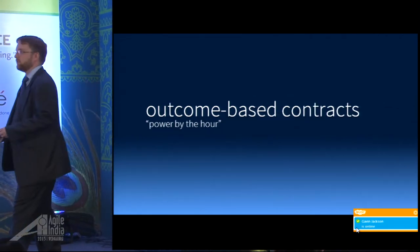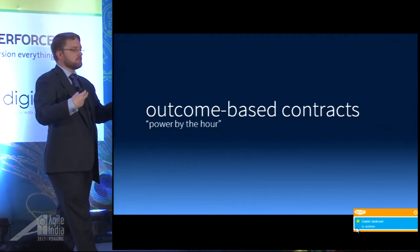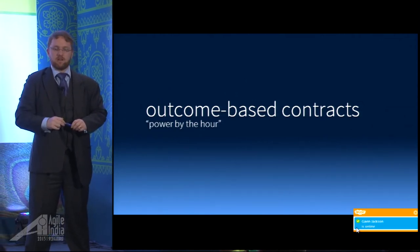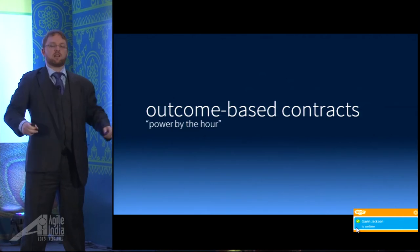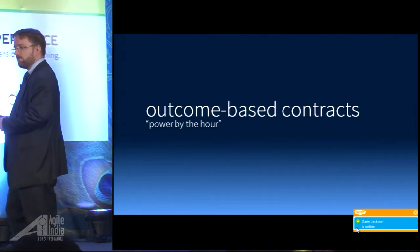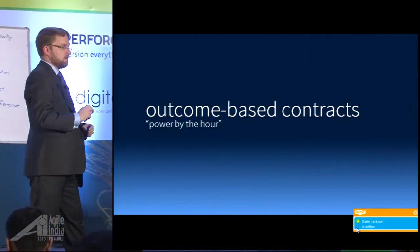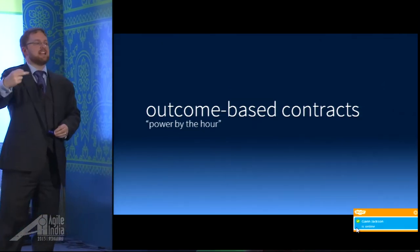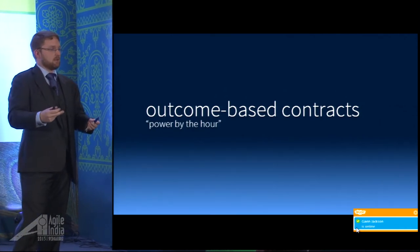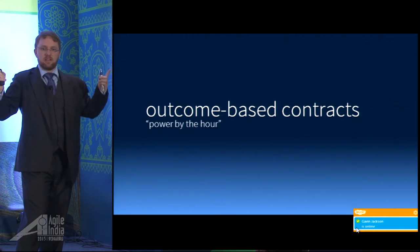So what we do is move to outcome-based contracts — sometimes known as performance-based contracts. The model came out of Boeing's 'power by the hour' contract. The way Boeing changed their financial model was: you pay us for each hour this engine is in the air. If the plane's on the ground, you don't pay us a cent.